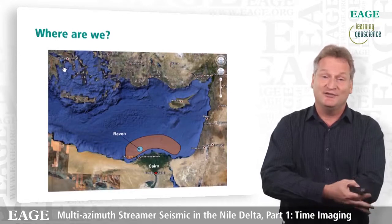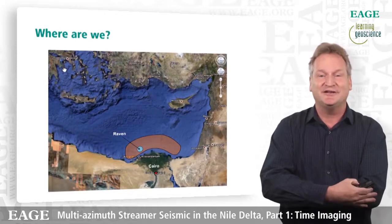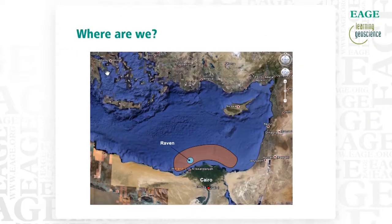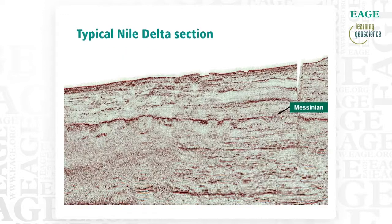So where are we? We're in the Nile Delta. You can see the map here with the Mediterranean, you can see Cairo there, with the green delta and we're just offshore. The data that we're going to look at is from the Raven field, which is part of the West Nile Delta development that BP is currently working on.